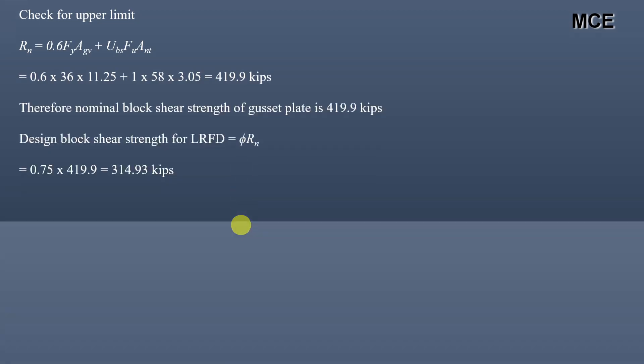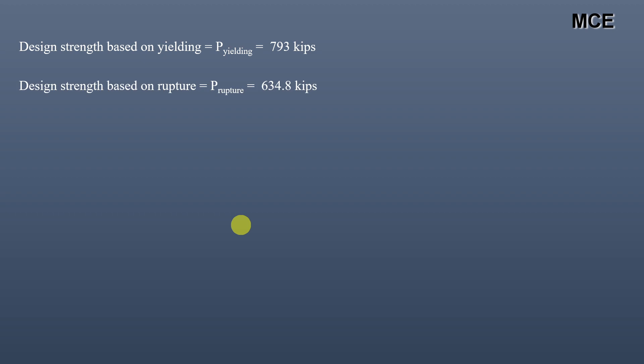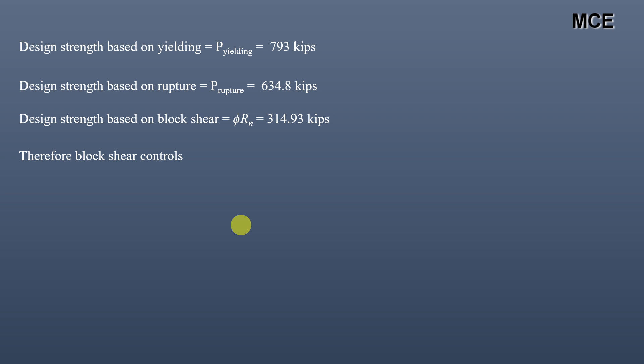Comparing all limit states: design strength based on yielding = 793 kips, design strength based on rupture = 634.8 kips, and design strength based on block shear = 314.93 kips. The lowest value controls the design, so block shear controls. The maximum factored tensile load that can be applied to this double channel section is 314.93 kips.